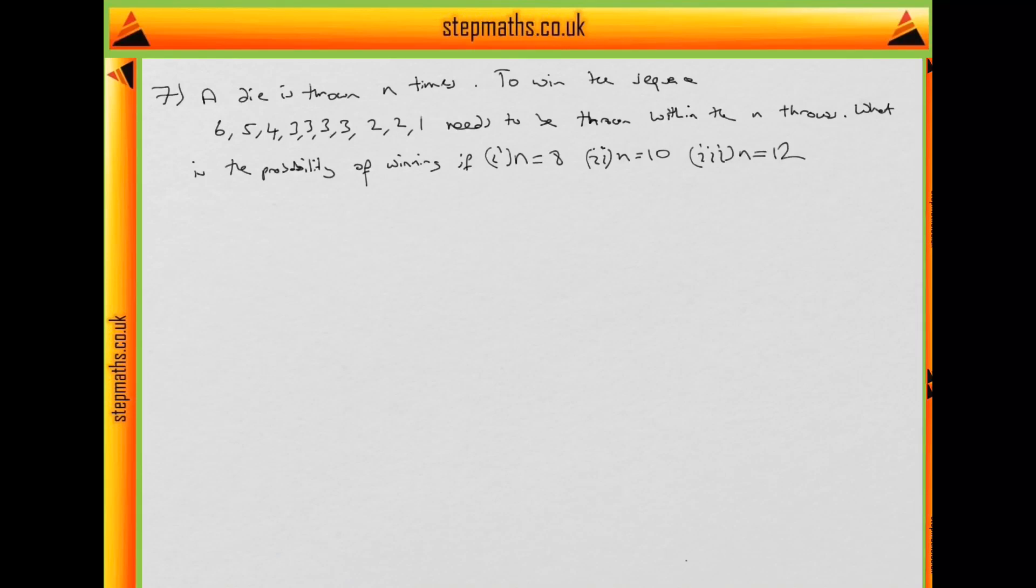And we're told to win, the sequence 6, 5, 4, 3, 3, 3, 2, 2, 1 needs to be thrown within the n throws. So we're asked, what is the probability of winning if (i) n is 8, (ii) n is 10, and (iii) n is 12?